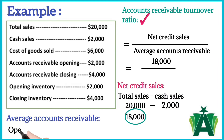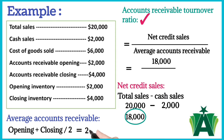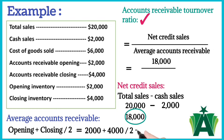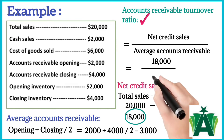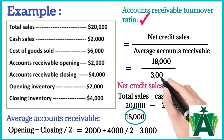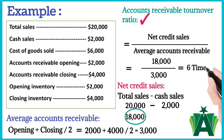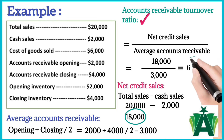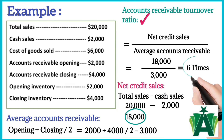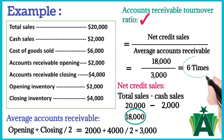This formula will be used to find the average accounts receivable: opening accounts receivable of $2,000 plus closing accounts receivable of $4,000, divided by 2. The average accounts receivable is $3,000. The accounts receivable turnover ratio is 6 times. A high accounts receivable turnover ratio indicates that a company is efficient in collecting its debts and has a low risk of bad debts.